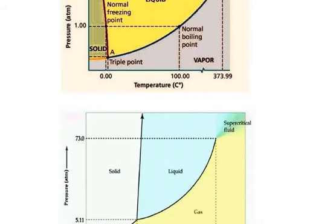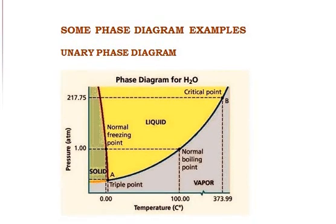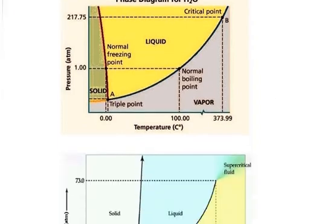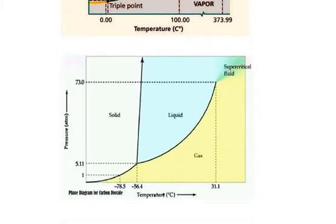The reason for that is the anomalous expansion of water. Instead of water expanding as it cools from the ice stage to the water stage, between zero and four degrees Celsius it actually contracts. And from the water phase to the ice phase, instead of contracting as is normal for other substances, it actually expands. Due to this anomaly, the line behaves as it does in the water diagram. For carbon dioxide and other substances, the phase diagram will typically look the normal way.